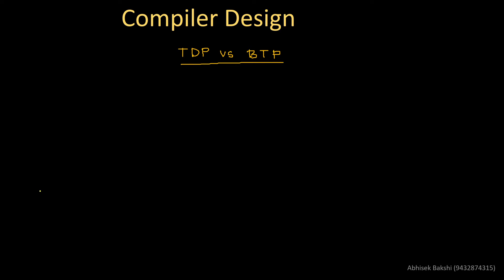Suppose we have a grammar like: S → a A B c, capital A → A B c, and capital A → small b, and capital B → small d. You may notice there is a left recursion in this grammar because the leftmost symbol of the RHS is equal to the LHS. But we know how to convert left recursion to a right recursive production rule — that is not a very tough job. For the time being, we can omit this observation because we are not here to discuss removal of left recursion; rather, we want to realize the difference between top-down and bottom-up parser working principles.